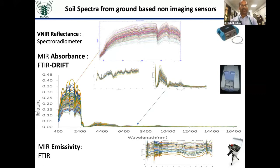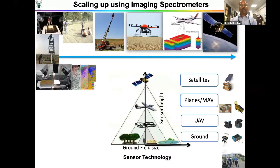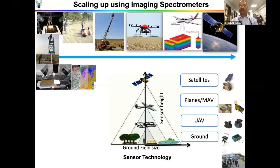Professor Keith nicely told us the potential of MIR with respect to VNR. This is about ground non-imaging sensors. When you come to satellite-level imaging sensors, you can see from a single pixel how you can go to airborne and then satellite level for regional-scale soil assessment — that remains a big challenge. We have efforts starting from ground imaging spectrometers, airborne imaging spectrometers, unmanned aerial vehicles, and also satellites.